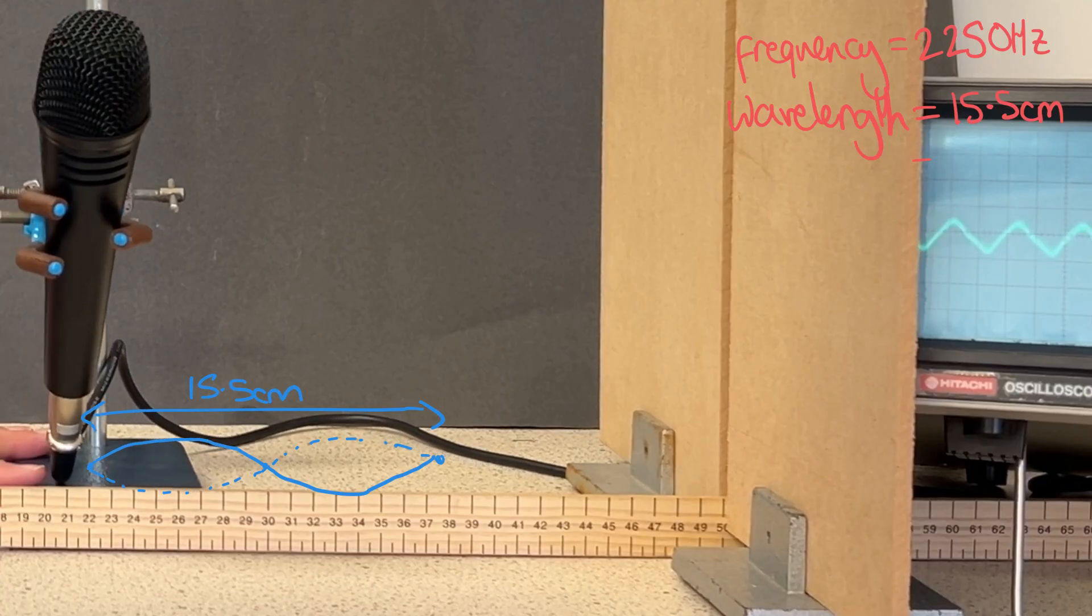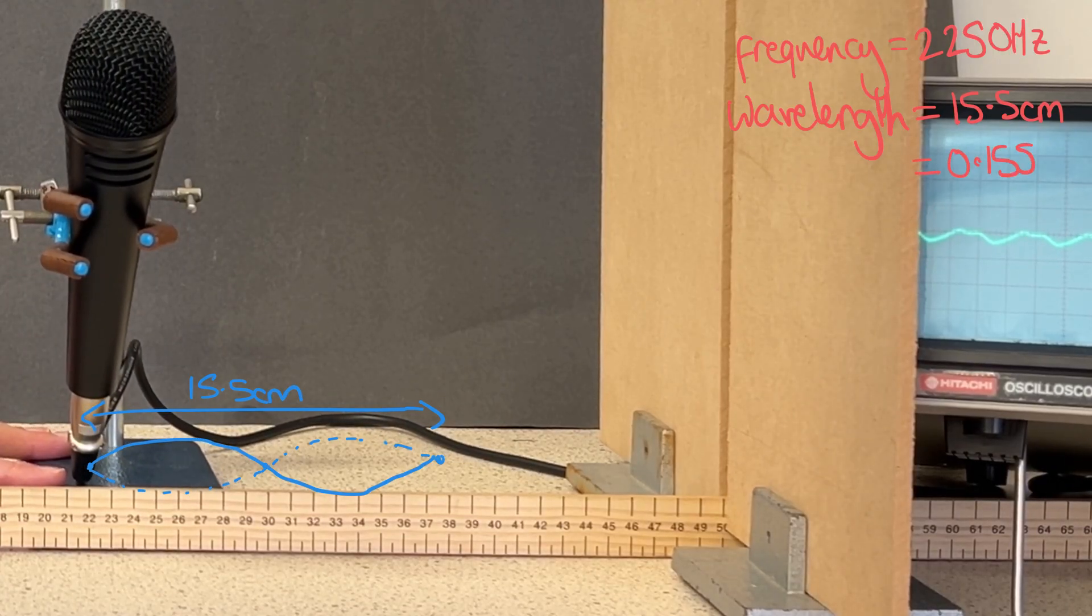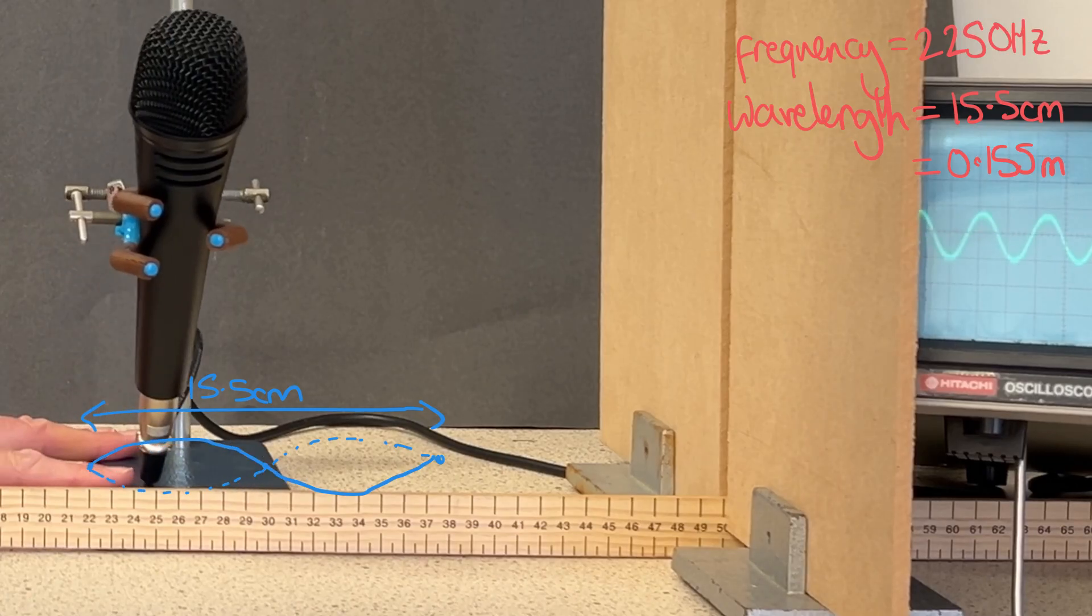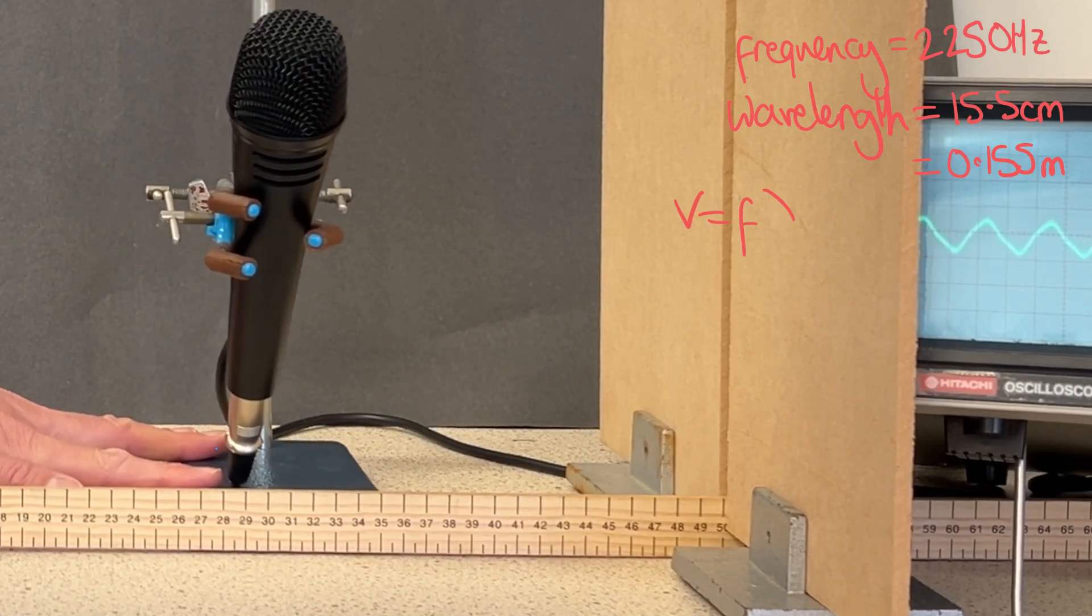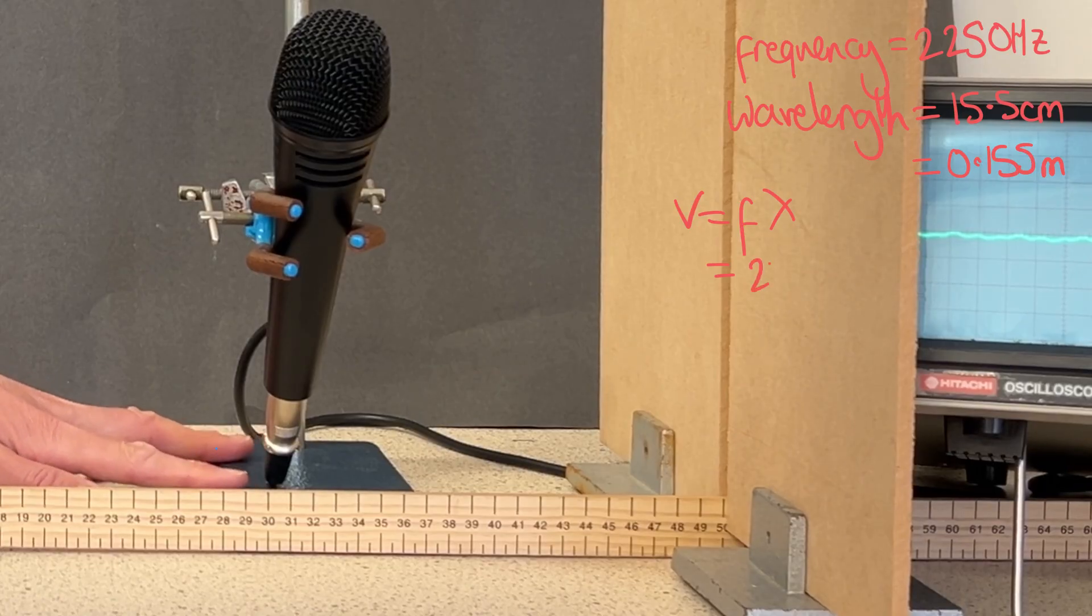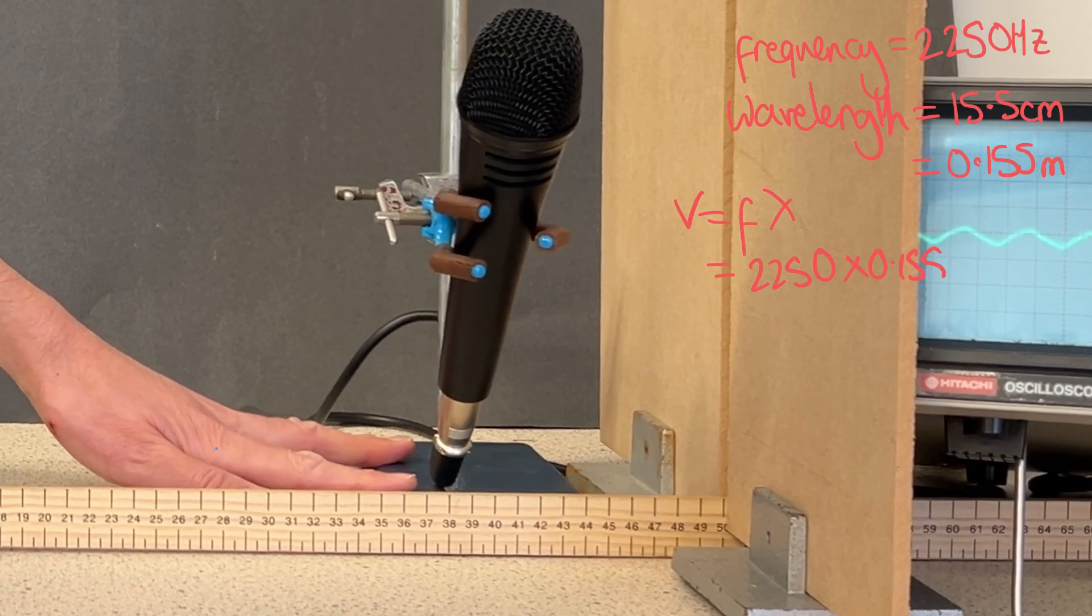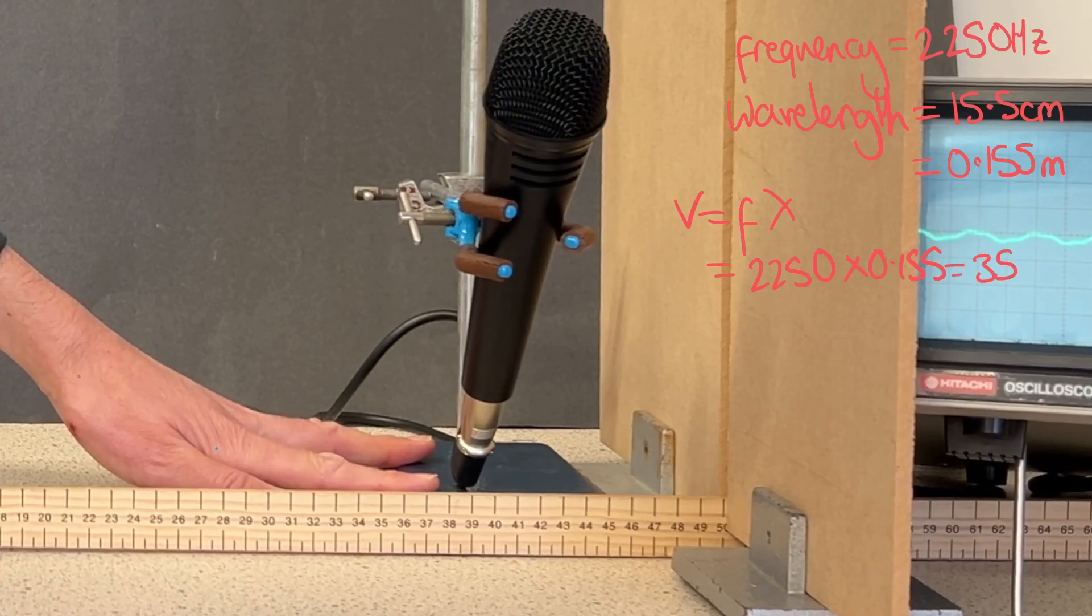If I convert that into meters, giving me 0.155 of a meter, and multiply it by the frequency of the sound wave, which was 2250, that should give me the speed of sound, which in this case gives me about 350 m per second, which is not too bad, as the accepted value is around 340 m per second.